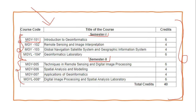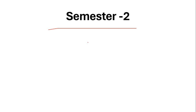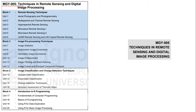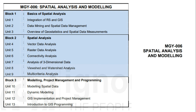Semester 2 covers advanced remote sensing and GIS topics. The first subject is MGY005 — Techniques in Remote Sensing and Digital Image Processing — which includes remote sensing techniques, image pre-processing, image classification and change detection techniques, and an introduction to R programming.